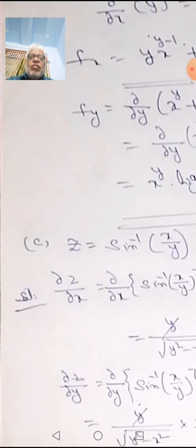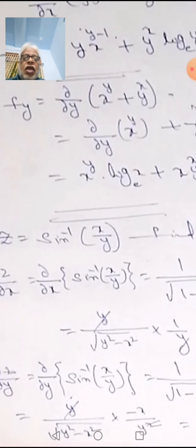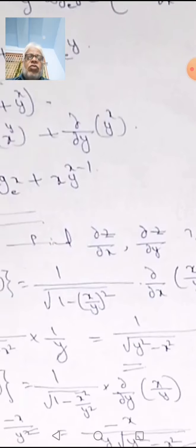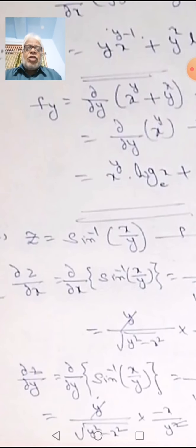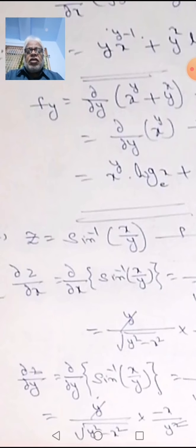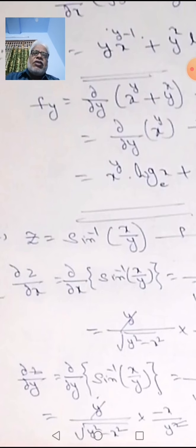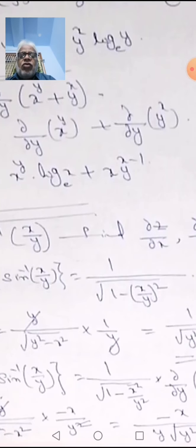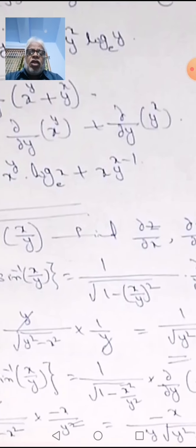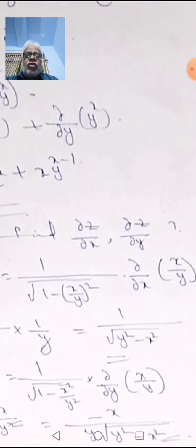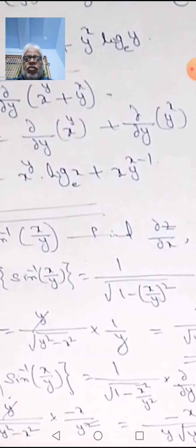Next problem: z equals sin⁻¹(x/y). Find dou z/dou x and dou z/dou y. For dou z/dou x, we compute dou/dou x of sin⁻¹(x/y). The differentiation of sin⁻¹(x) is 1/√(1-x²), so here we get 1/√(1 - (x/y)²) multiplied by the internal derivative dou/dou x of (x/y).